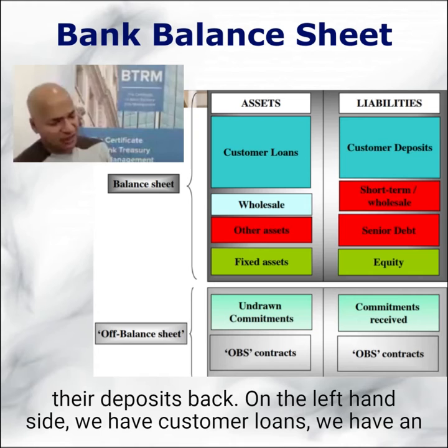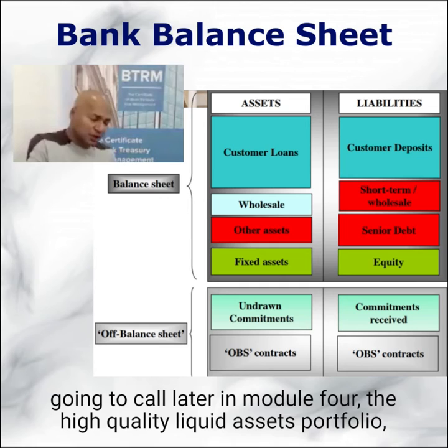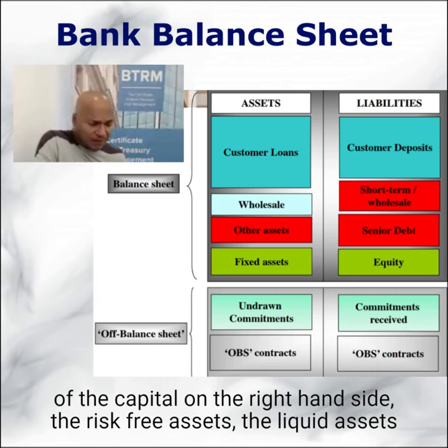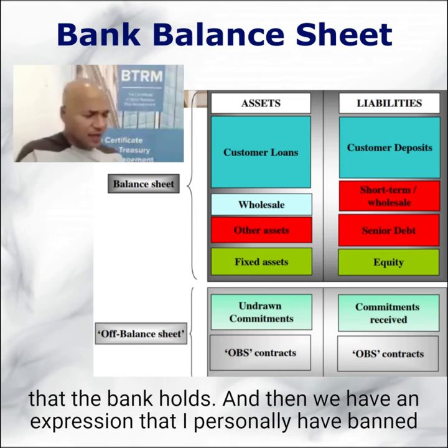On the left-hand side, we have customer loans. We have an element under other assets that is risk-free assets — what we're going to call later in Module 4 the high-quality liquid assets portfolio. That is often what equity is invested in, so it's often a mirror, to an extent, of the capital on the right-hand side: the risk-free, liquid assets that the bank holds.